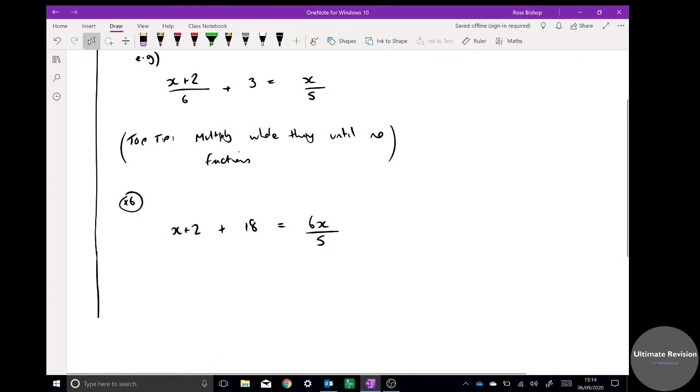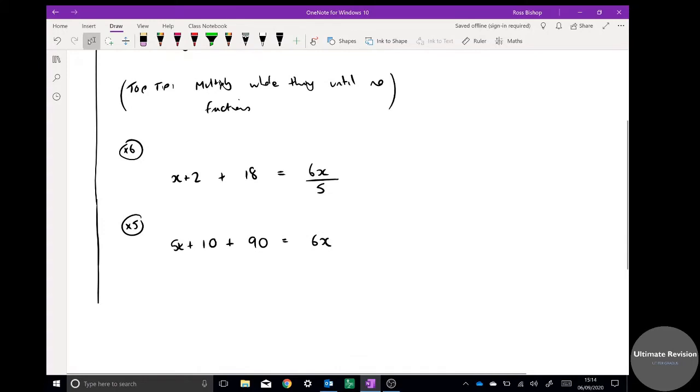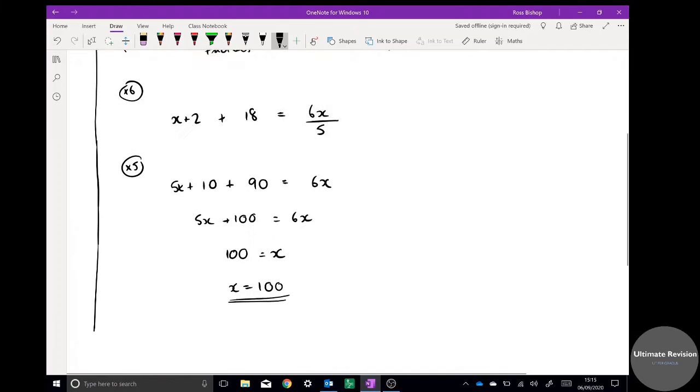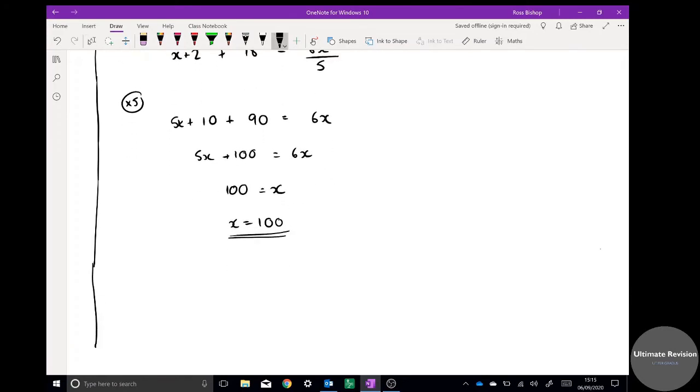I've still got a fraction here so I'm now going to times the whole thing by 5, every term by 5. 5x plus 10 plus 90 and that times 5 is just 6x. Now I can group it together: 5x plus 100 equals 6x. If I minus 5x from both sides I get 100 equals x. Just tidy up again, x equals 100, and that is the best way to answer those questions. Multiply everything until you've got no fractions left and then solve, it becomes much easier.